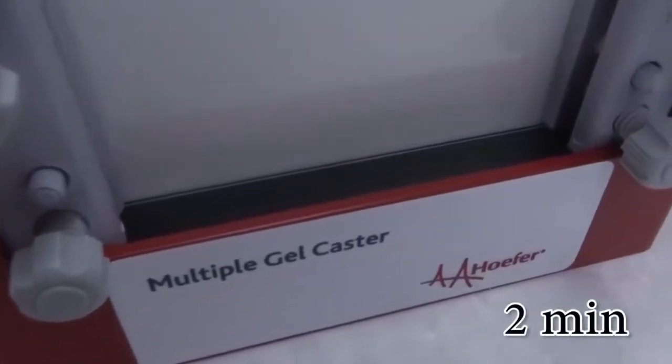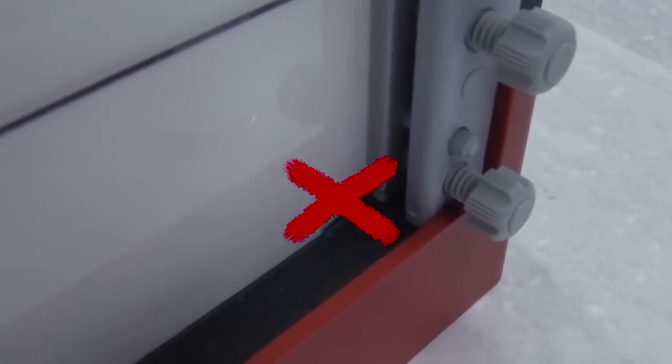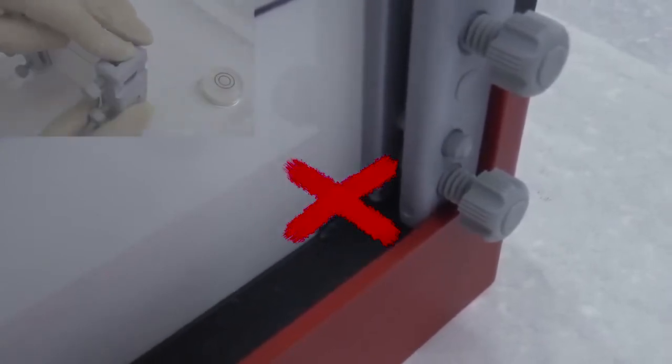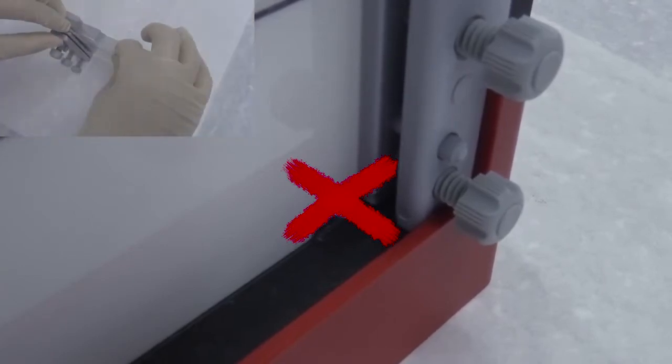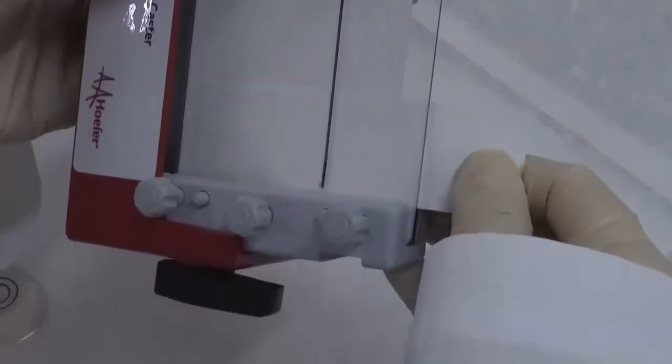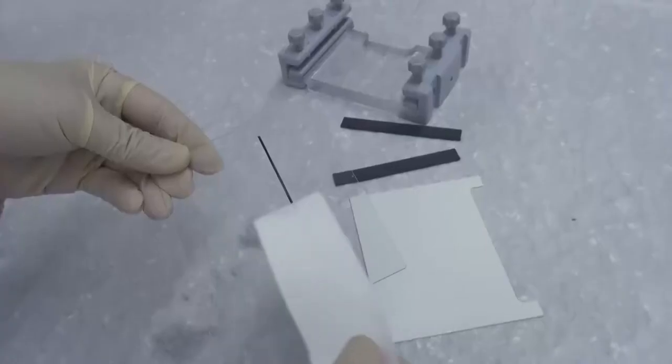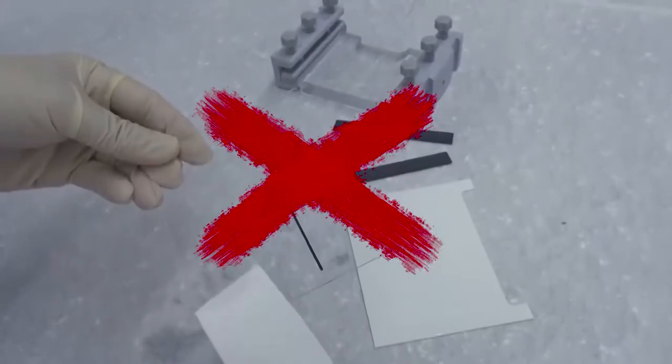Fill the space in the cassette with distilled water and let it stand for two minutes. Observe if any water leaking at the bottom. A leakage means the cassette has not been assembled properly or the bottom of it is not flush. Then the cassette has to be reassembled. If there is no leakage, pour the distilled water out. Insert a filter paper strip between the plates to blot away the residue water. Do not disassemble the cassette for drying. Otherwise, you waste all your work so far.